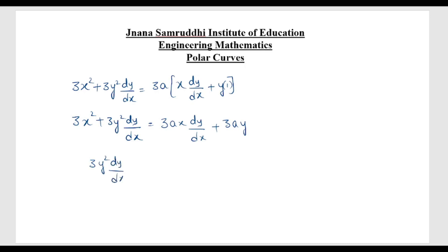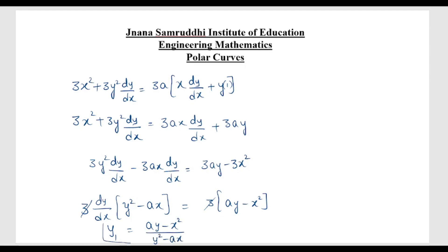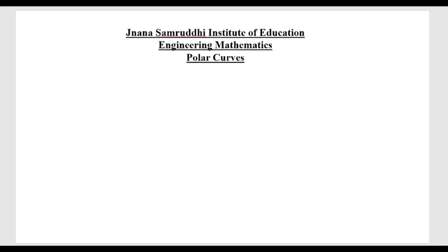Next we use the variable separable method — bring dy/dx terms to one side. So 3y² dy/dx − 3ax dy/dx = 3ay − 3x². Taking dy/dx and factor of 3 common: dy/dx(y² − ax) = 3(ay − x²). The 3s cancel, giving y1 = dy/dx = (ay − x²)/(y² − ax).